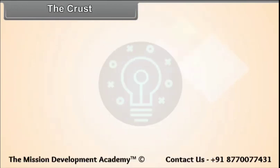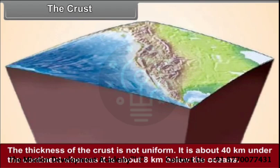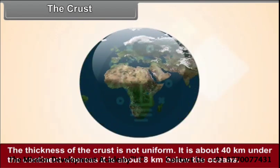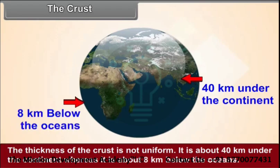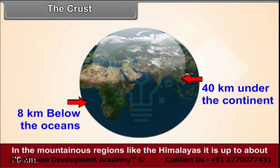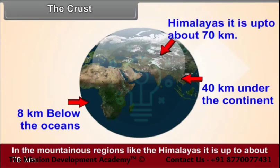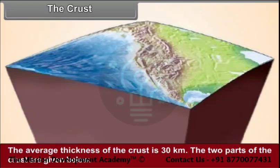The crust. The thickness of the crust is not uniform. It is about 40 kilometers under the continent, whereas it is about 8 kilometers below the oceans. In the mountainous regions like the Himalayas, it is up to about 70 kilometers. The average thickness of the crust is 30 kilometers. The two parts of the crust are given below.